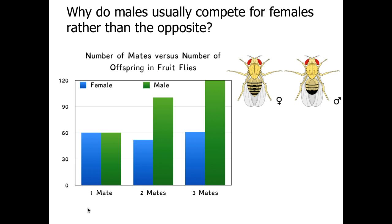Usually males are going to compete for females, and females are going to tend to have fewer mates. If we look at this graph about fruit fly mating patterns, females are in blue and males are in green. For females, regardless of how many mates they have, they can only produce eggs so quickly. Whether they have one, two, or three mates, their reproductive output is about the same — around 60 offspring per female fruit fly.